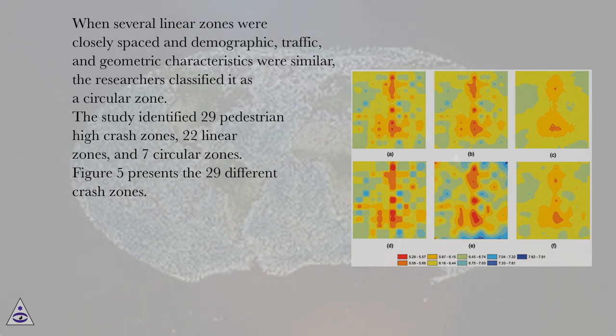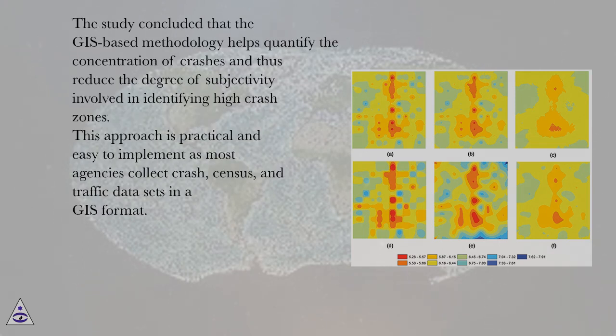Figure 5 presents the 29 different crash zones. The study concluded that the GIS-based methodology helps quantify the concentration of crashes and thus reduce the degree of subjectivity involved in identifying high crash zones. This approach is practical and easy to implement as most agencies collect crash, census, and traffic data sets in a GIS format.